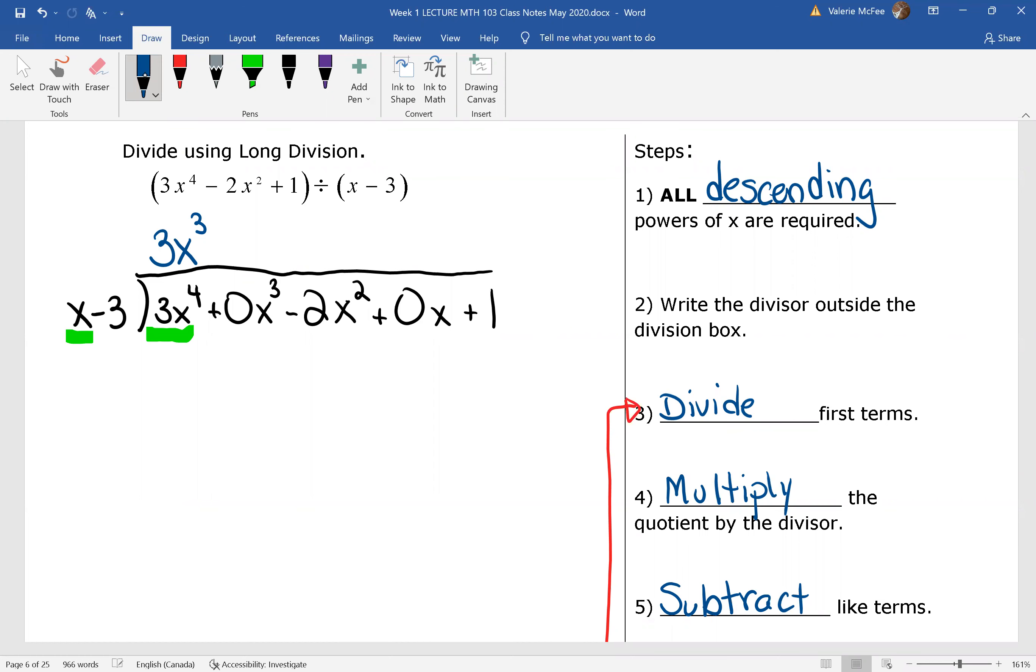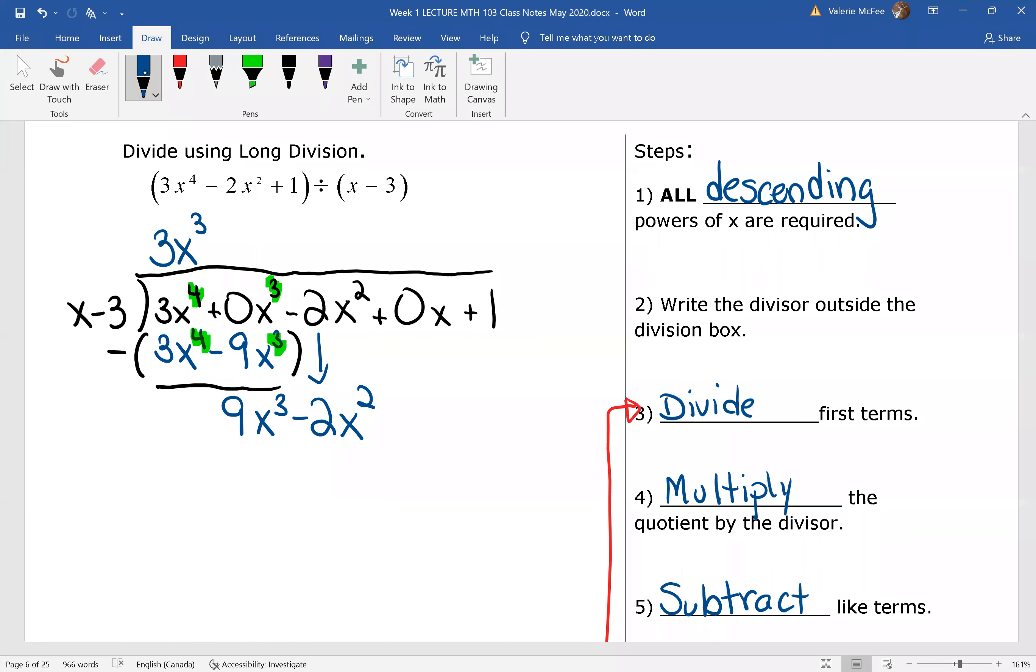The next step is to multiply. You use the distributive property to multiply and you made sure that your powers were matching when you wrote the product. Now subtract. Well, you can see I've subtracted and brought down the next term. That means we need to go back up to step 3 and divide.